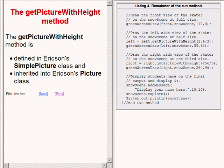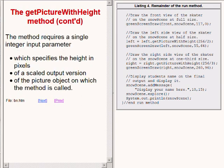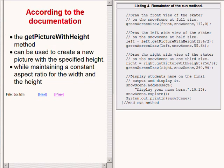This method requires a single integer input parameter. The parameter specifies the height in pixels of a scaled output version of the picture on which the method is called. This method can be used to create a new picture with a specified height while maintaining a constant aspect ratio for the width and the height.